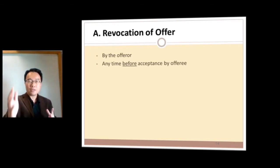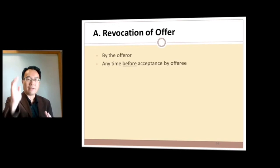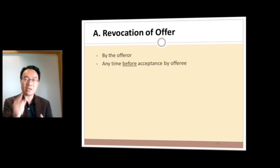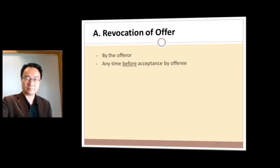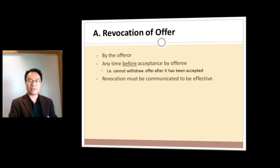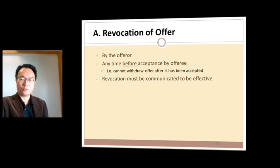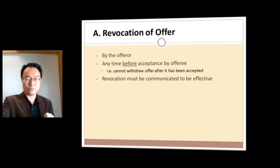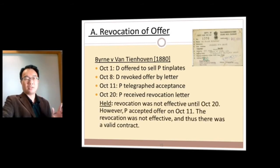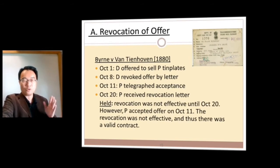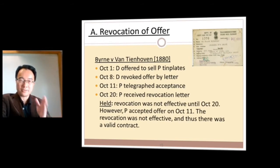For example, I could say I offer $1,000 to anybody who can come to my office and knock on my door — then immediately say I've changed my mind, I revoke it. None of you have accepted yet because I haven't heard the door knocking, so I can validly revoke my offer. If you had knocked on my door before I revoked it, then I'm stuck and have to pay you. Revocation must be communicated to be effective — I must actually tell you that I'm revoking.